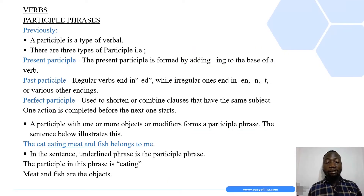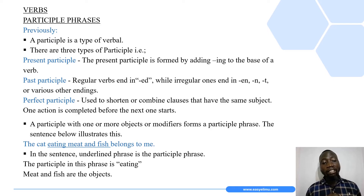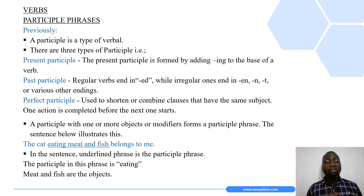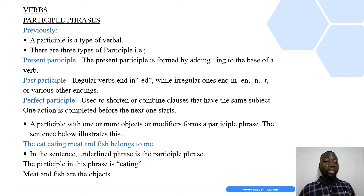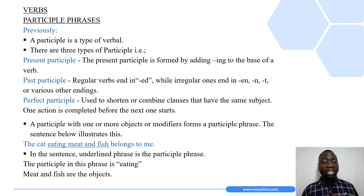That area is participle phrases. Before we look at what participle phrases are, just as a reminder — previously, back in Form Three work, we learned about participles. Some of the things we learned were: number one, a participle is a type of verbal; and number two, we have three types of participles — the present participle, the past participle, and the perfect participle.